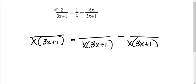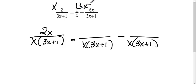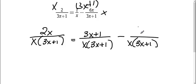This first fraction was missing the x part, so I need to multiply that by x — 2 times x gives us 2x. This first part was also missing the 3x plus 1, so 1 times (3x plus 1) is 3x plus 1. And this last fraction was missing the x, so 6x times x gives us 6x squared.